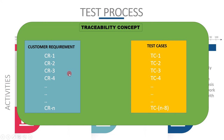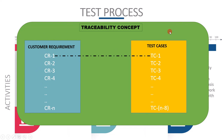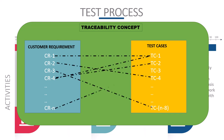During traceability, we develop a virtual bidirectional link between requirements and test cases using some tools. As soon as we write the test case for a requirement, we link them using the tool. For example, requirement 1 is linked to test case 1. Since we have bidirectional traceability, at any time we can see which test case is linked to requirement 1, or which requirement is connected to test case 1. Similarly, we can provide traceability for other test cases. Now you can see each requirement has test cases linked to it. This is all about the traceability concept.